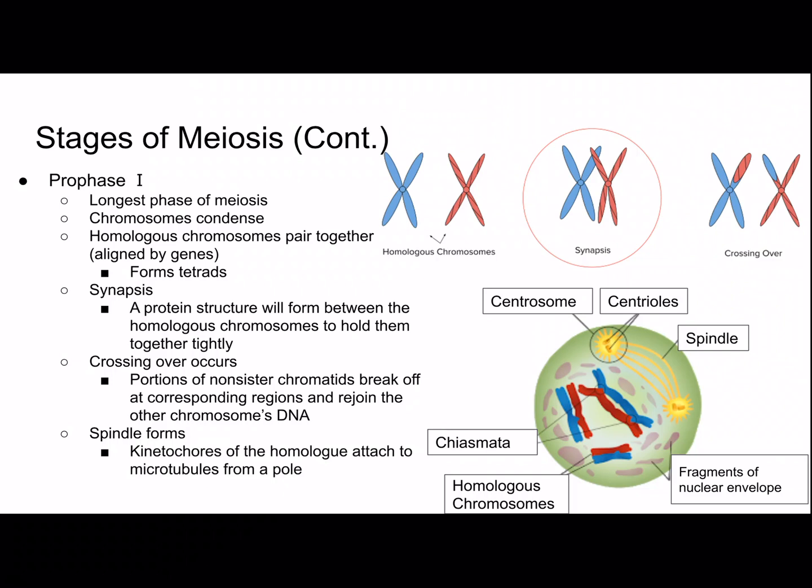Centrosomes are important for organizing spindle fibers, and centrioles are part of the centrosomes. The spindle is forming and there are fragments of the nuclear envelope, because the nucleus dissolved in interphase. The chiasmata are the places where the two homologous chromosomes touch each other, and that is where crossing over will occur.